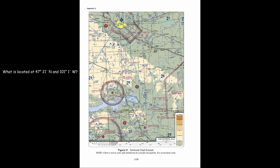Next, we look for 101 degrees one minute west. Here's 101 — this is longitude — and we move one minute west, come down, and find Washburn Airport. Therefore, the answer is that what's located at 47 degrees 21 minutes north and 101 degrees one minute west is Washburn Airport.